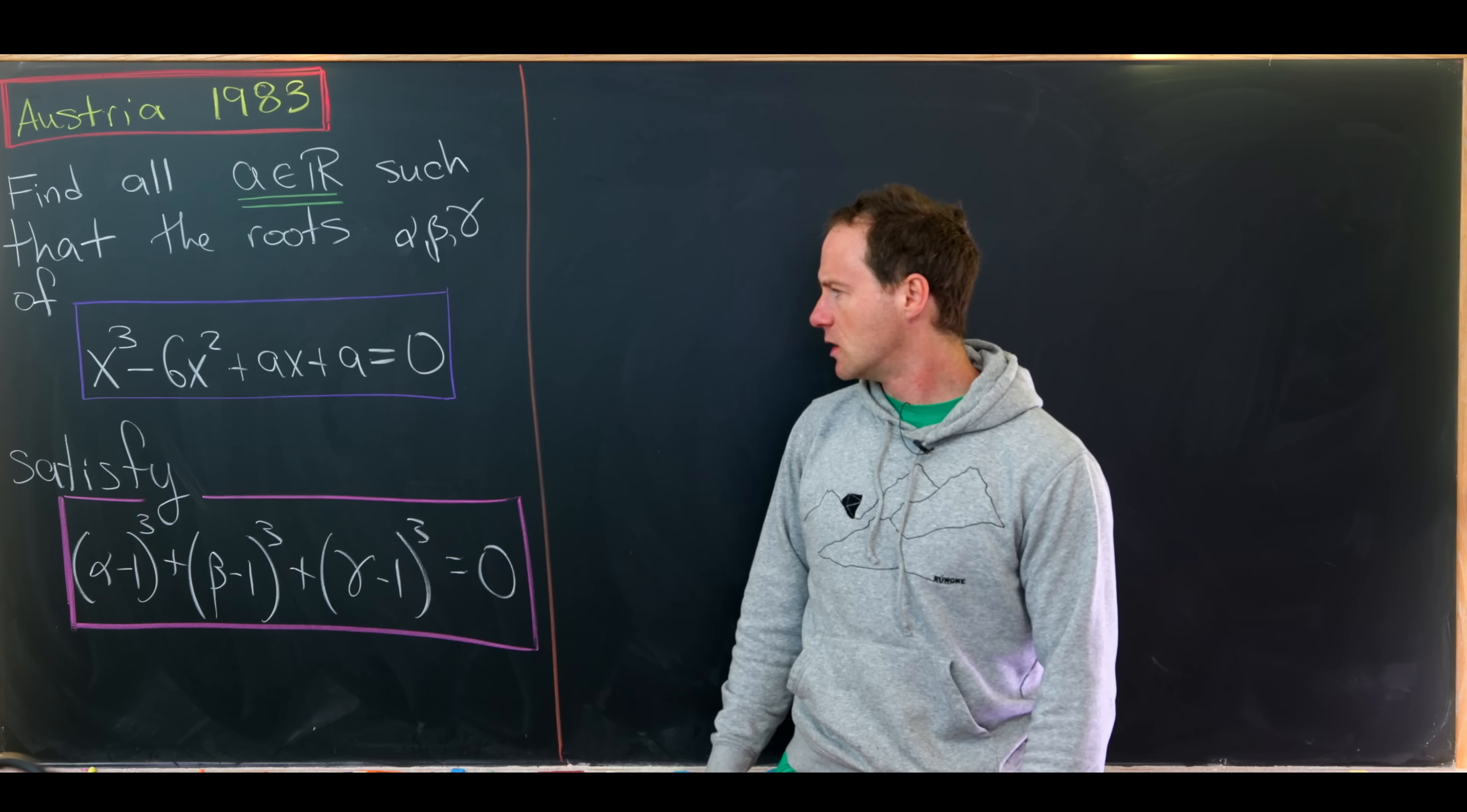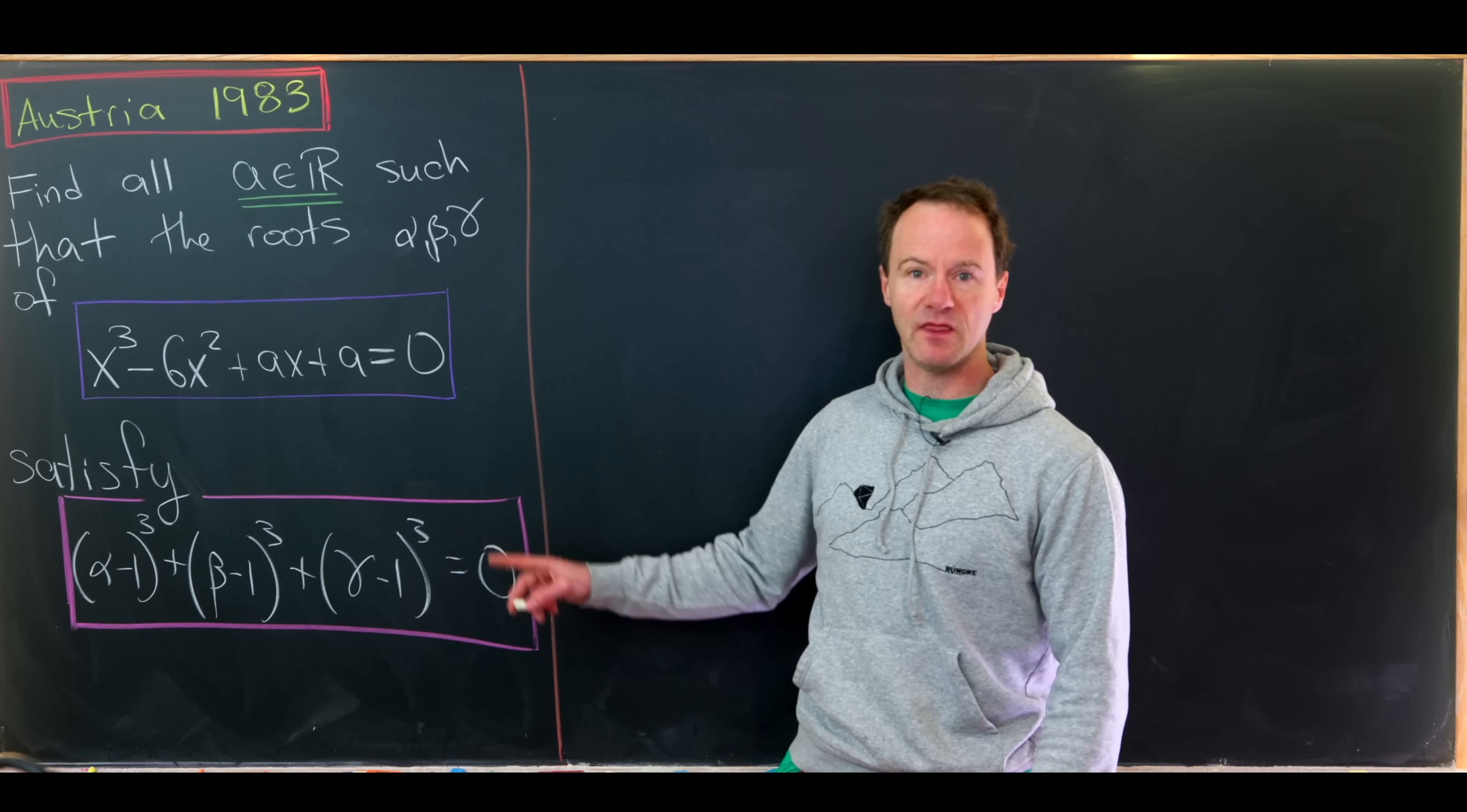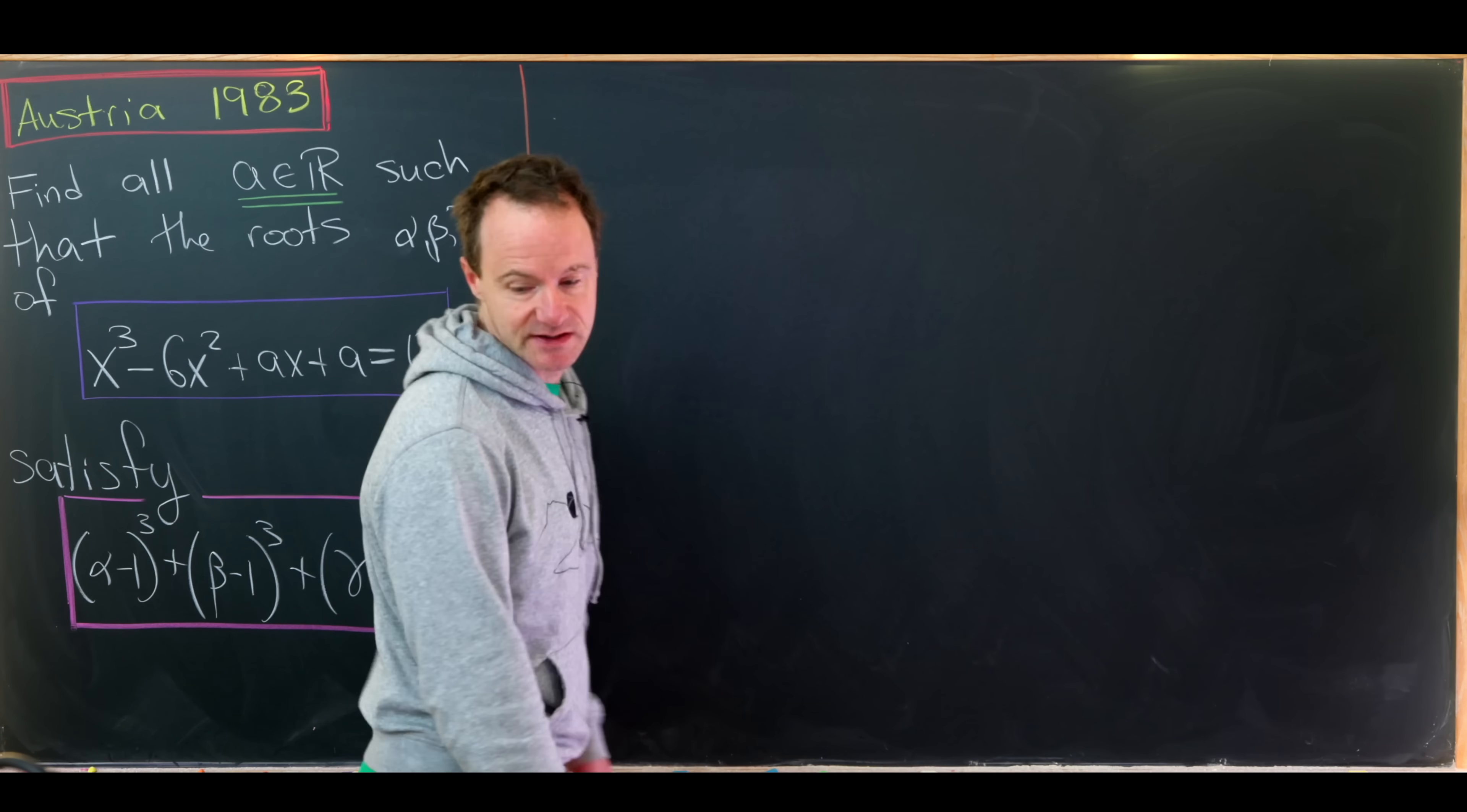Our goal here will be to form some sort of large enough system of equations for alpha, beta, and gamma using both this equation as well as this equation. Those systems of equations will necessarily involve a, and then we'll play around with these equations until we can get a number value for a. So let's get to it.